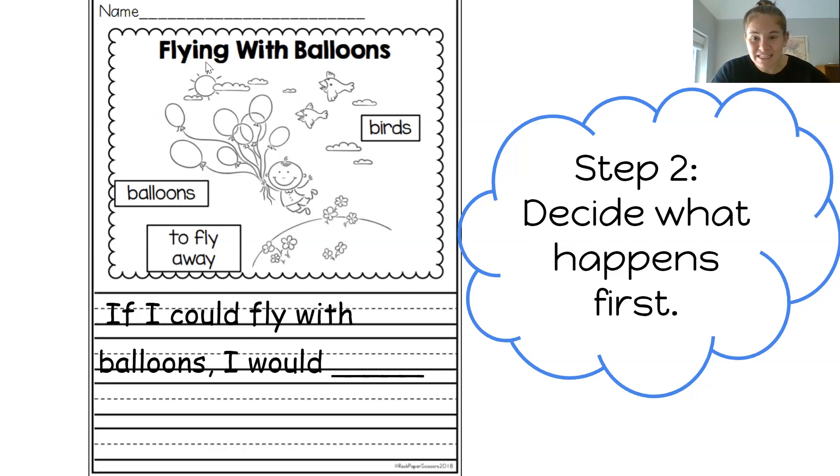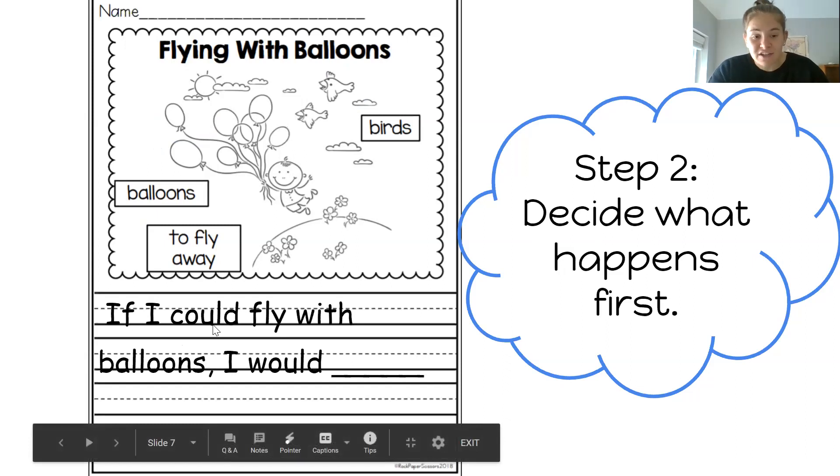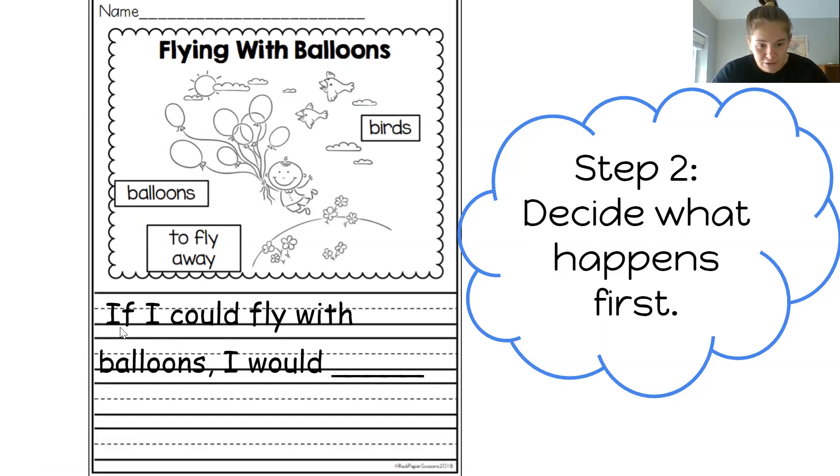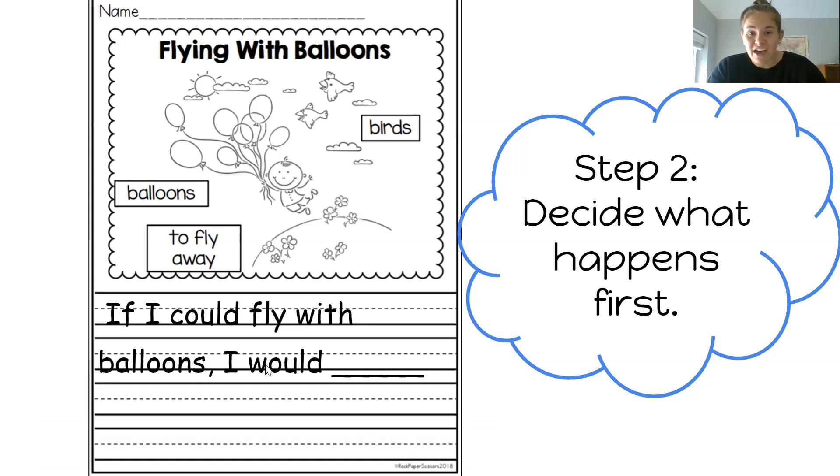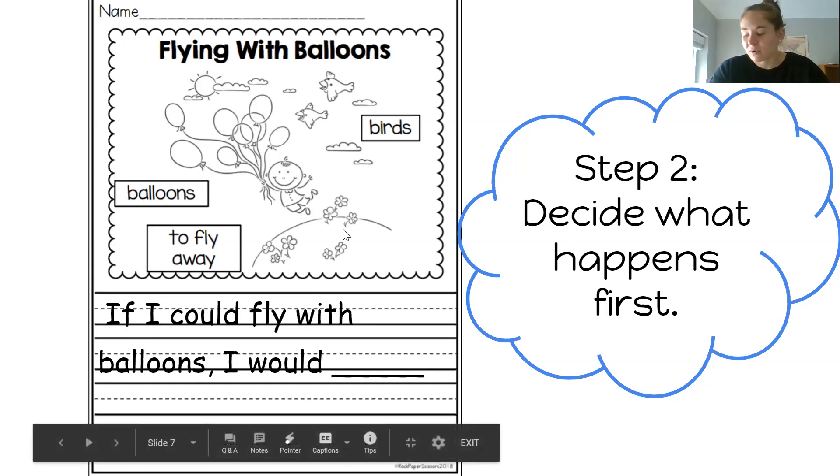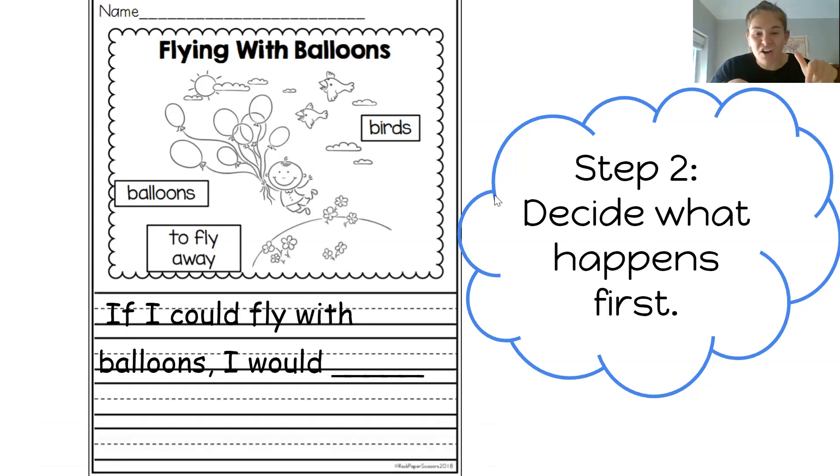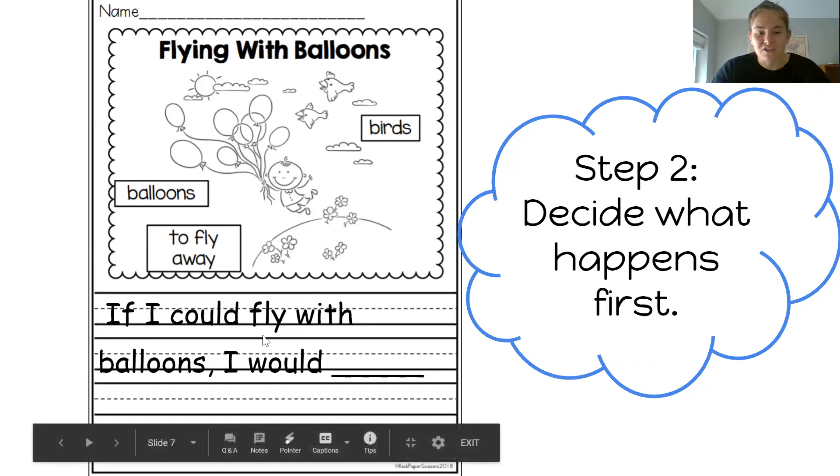Okay, so we've brainstormed some ideas and now we're on step two. It says, decide what happens first. Okay, so we're going to use this sentence to start our story. It says, if I could fly with balloons, I would blank. So you can pause the video and copy down this sentence just like it is. If I could fly with balloons, I would. Once you copy down that sentence, we're going to think about what ideas we will fill in first. So go ahead and pause the video and write down the start of this sentence. Hit play when it's all written down.